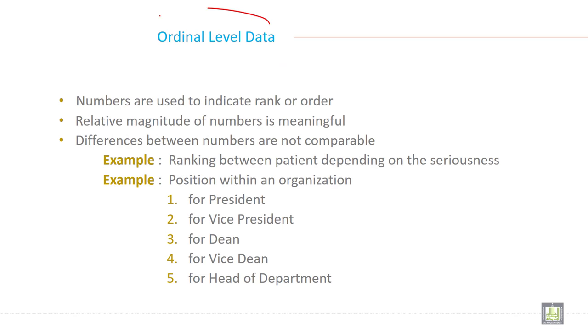Ordinal level data is the second type of data measurement technique. Numbers are used to indicate rank or order. Relative magnitude of numbers is meaningful. Differences between numbers are not comparable.